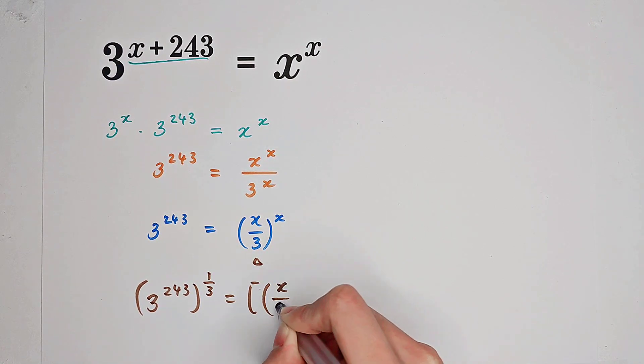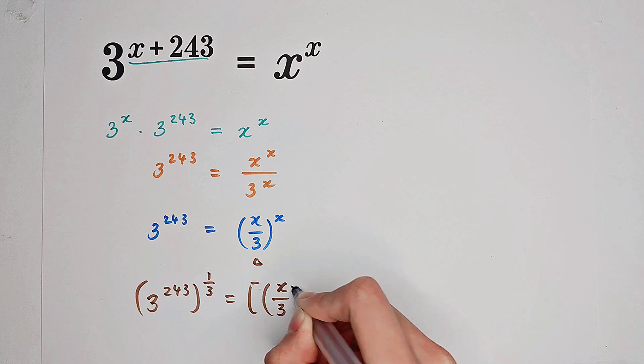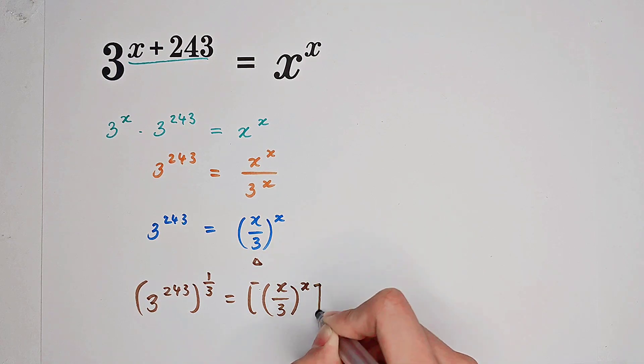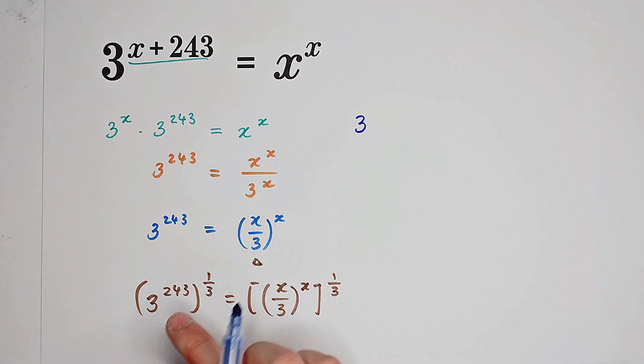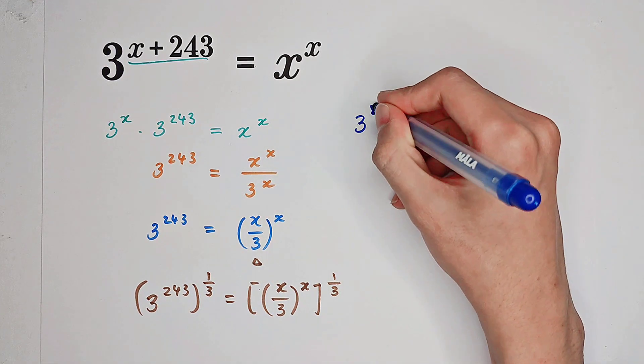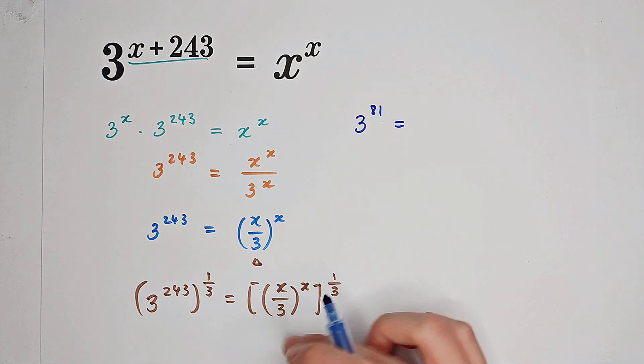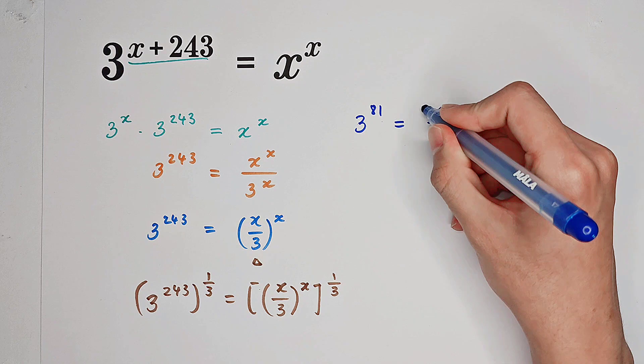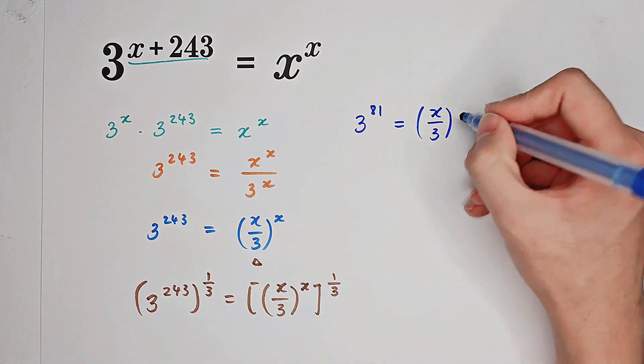Then, a miracle will happen. On the left-hand side, we have 3 to the power of 243 over 3, which is 81. On the right-hand side, we have x over 3, all to the power of x over 3.